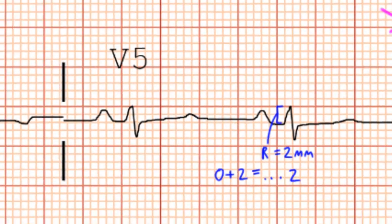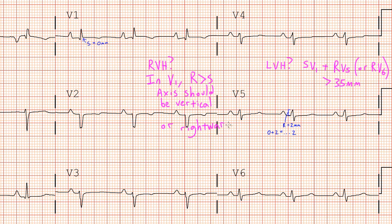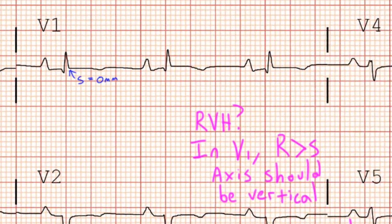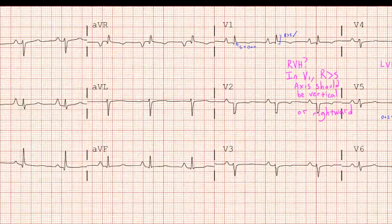Next let's look for signs of RVH. For right ventricular hypertrophy, we look in lead V1 to see if the R is taller than the S — in other words, we're looking to see if the QRS complex is generally positive. Additionally, in the frontal plane, our QRS axis should be vertical or rightward. Looking here in lead V1, we can see that the R wave is taller than the non-existent S wave, and the QRS complex is positive. So now we'll just look to see if our axis points vertically or rightward.